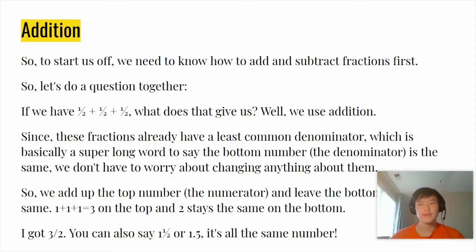So to start us off, we need to know how to add and subtract fractions first. Let's do a question together. If we have 1/2 + 1/2 + 1/2, what does that give us? Well we use addition. Since these fractions already have a least common denominator, which is basically a super long word just to say the bottom number is the same, we don't have to worry about changing anything about them. So we add up the top number, the numerator, and leave the bottom the same. So 1 + 1 + 1 = 3 on the top and the 2 stays the same on the bottom. So our answer is 3/2. You can also say 1 and 1/2 or 1.5. It's all the same number in different forms.